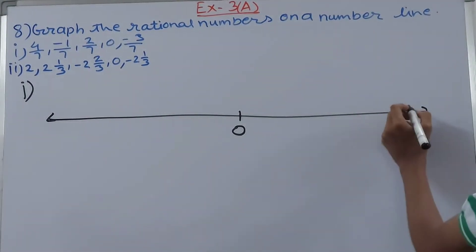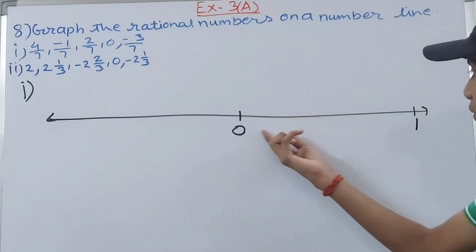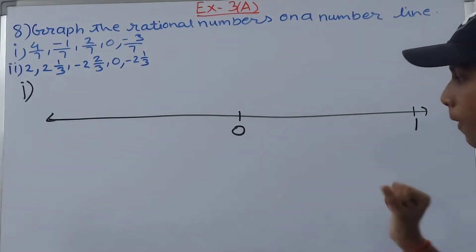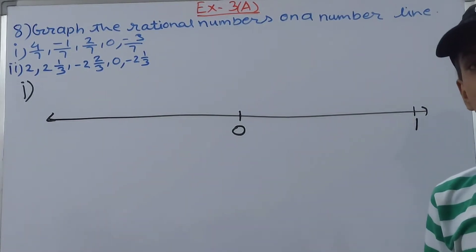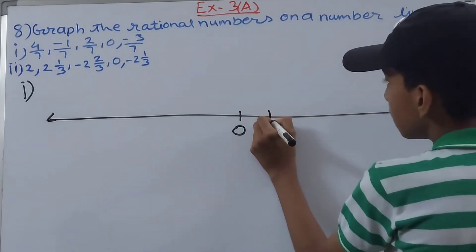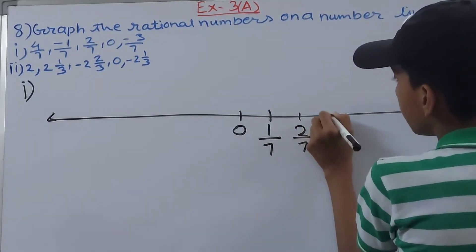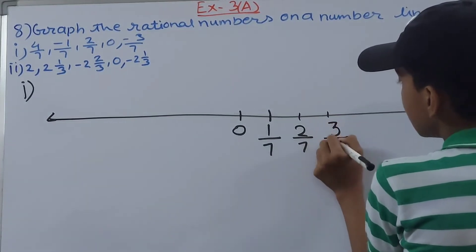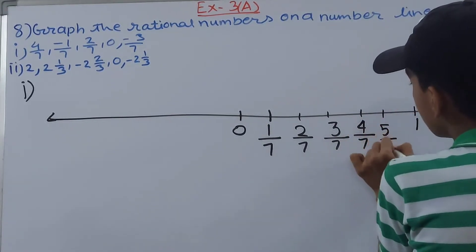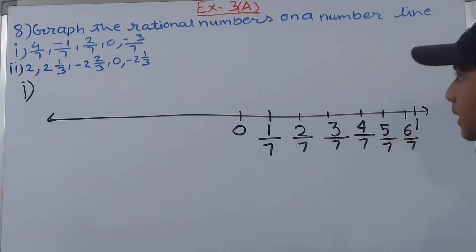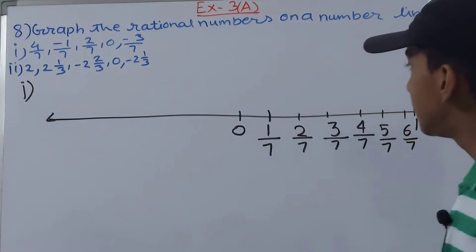Here is 0 and here is 1 whole. We divide this distance into 7 parts. One part is already there, so we need to make six more. So we mark: 1 upon 7, 2 upon 7, 3 upon 7, 4 upon 7, 5 upon 7, and 6 upon 7.